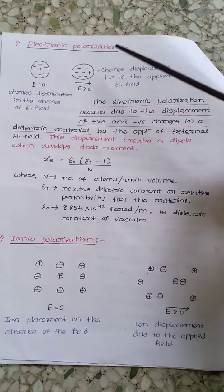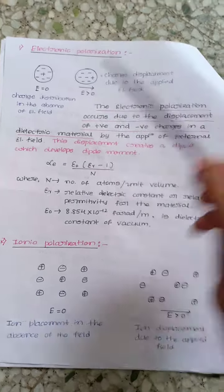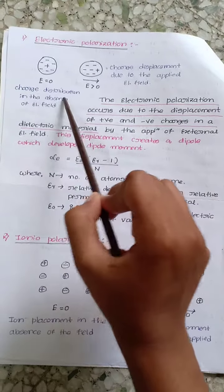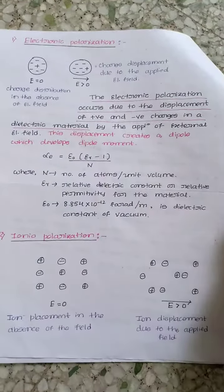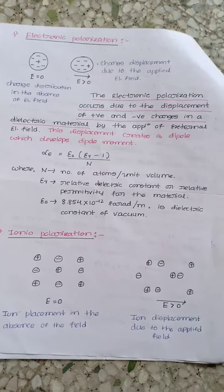First one is electronic polarization. This is the diagram for electronic polarization in a dielectric material. Let's see what happens here.